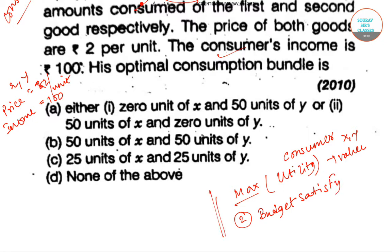The first option is 0 units of good x and 50 units of good y. The second is 50 units of good x and 0 units of good y. And a third option is 50 units of good x and 50 units of good y.